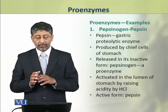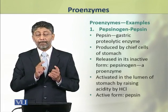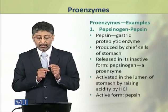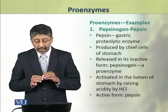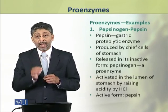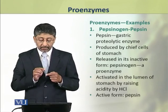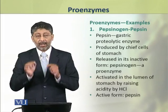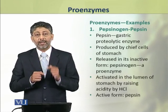Now we shall take a few examples of enzymes secreted as proenzymes. First we shall discuss pepsinogen. The active form of pepsinogen is pepsin, which is a gastric proteolytic enzyme. This enzyme is synthesized by the chief cells of gastric glands of the stomach. It is released in the inactive form pepsinogen, which is a proenzyme. This proenzyme, pepsinogen, is activated in the lumen of the stomach by raising the acidity by hydrochloric acid. The increase in acidity converts pepsinogen into its active form, pepsin.